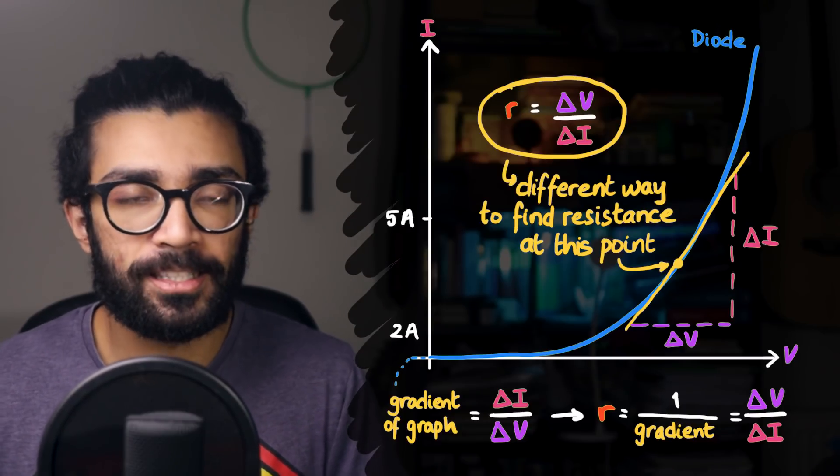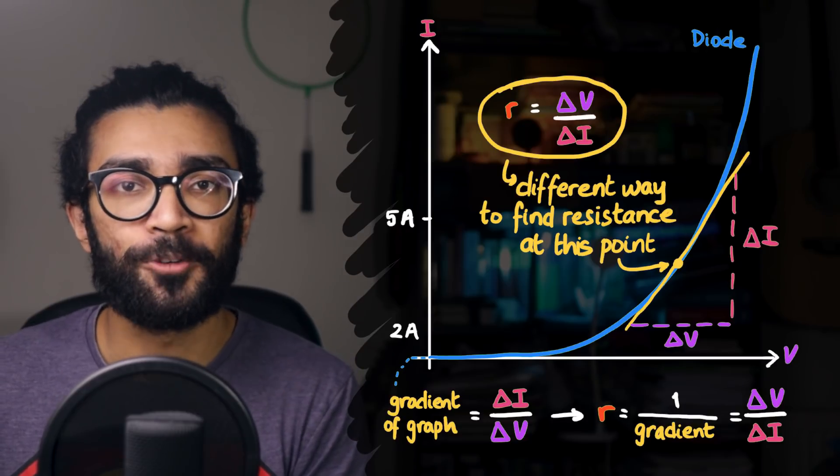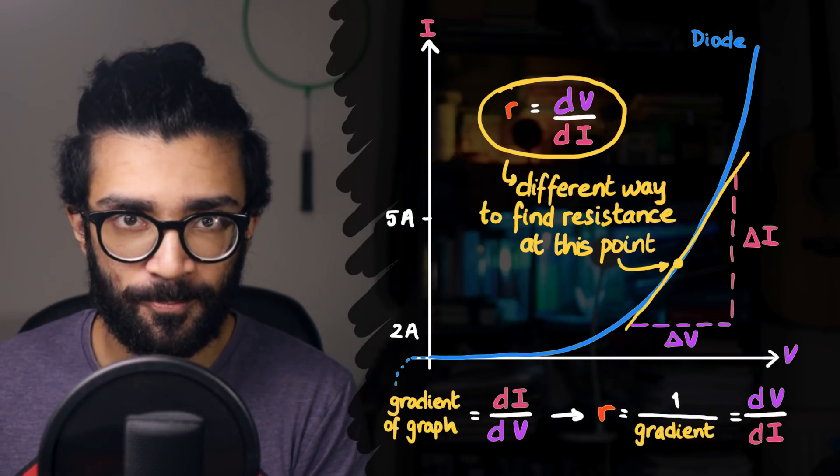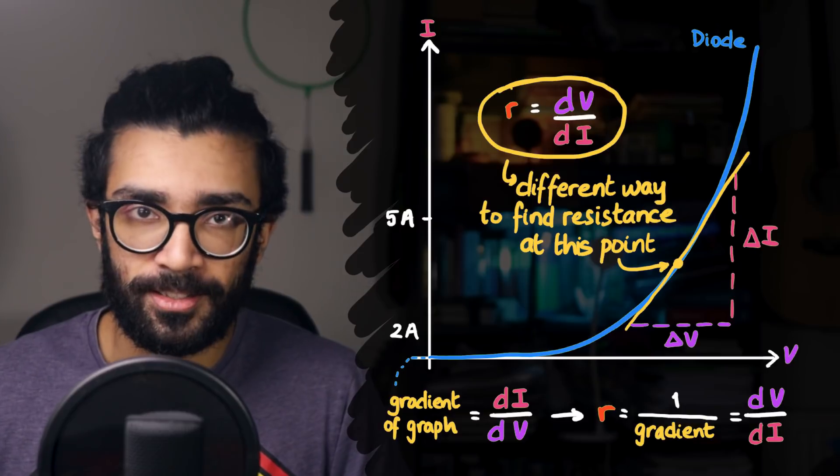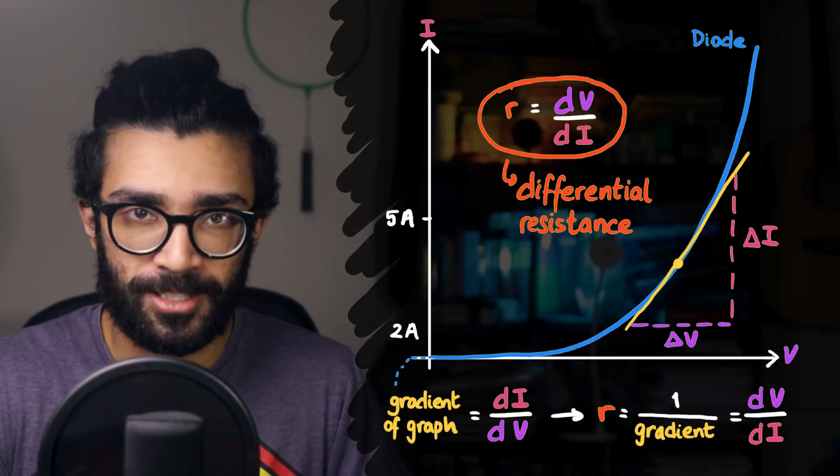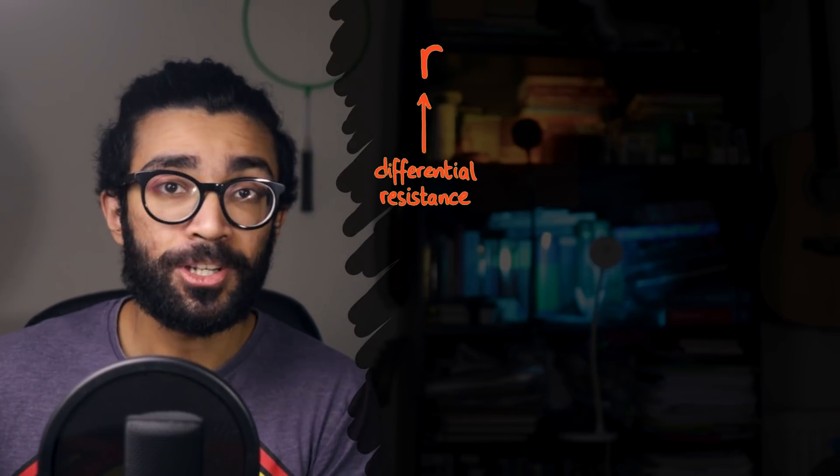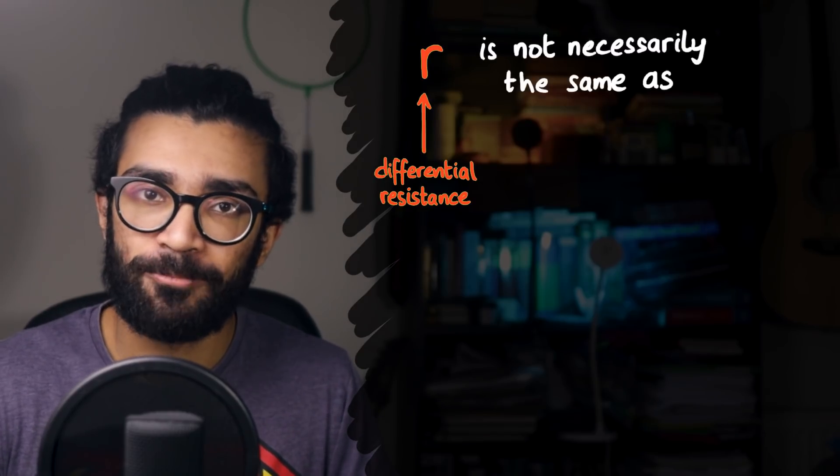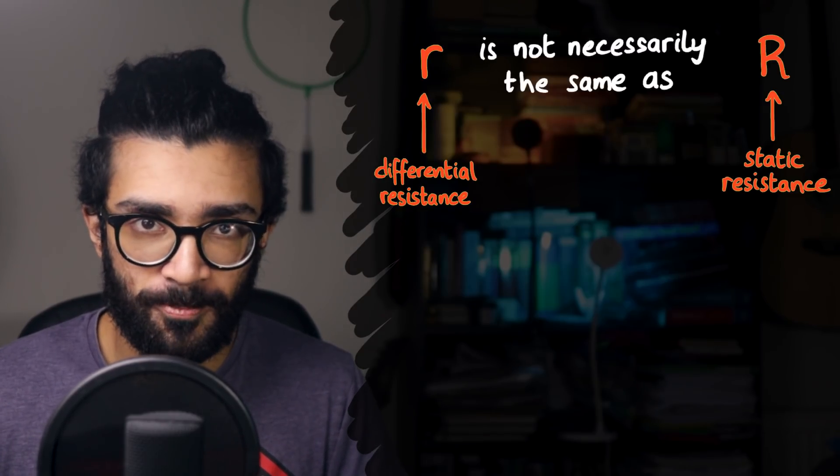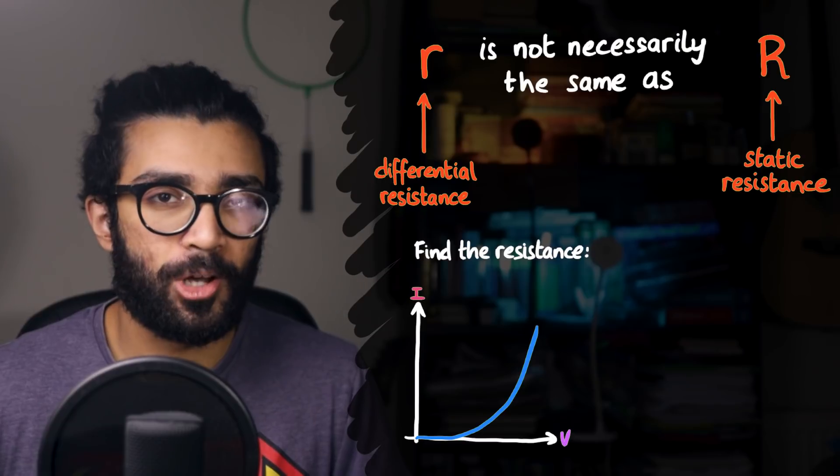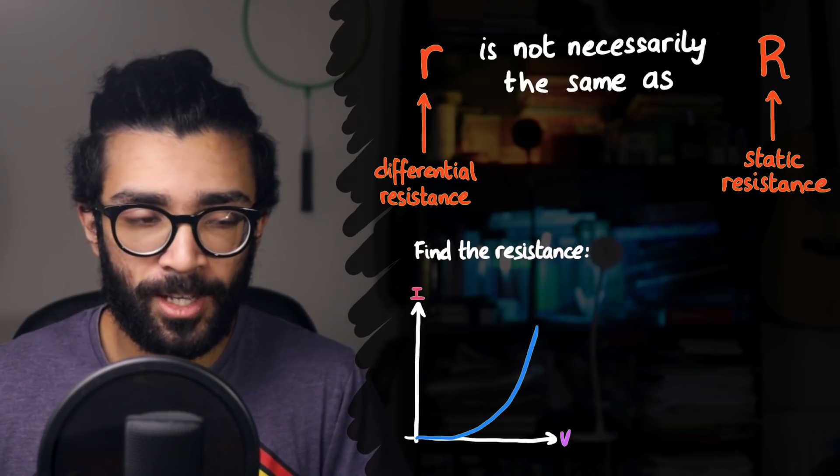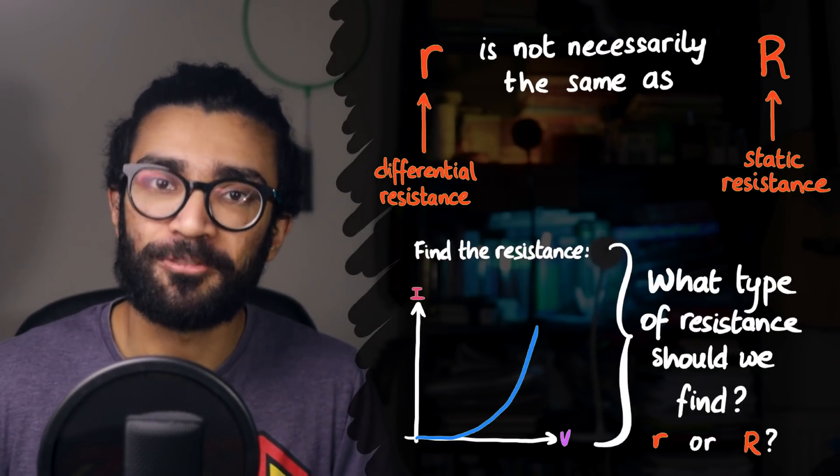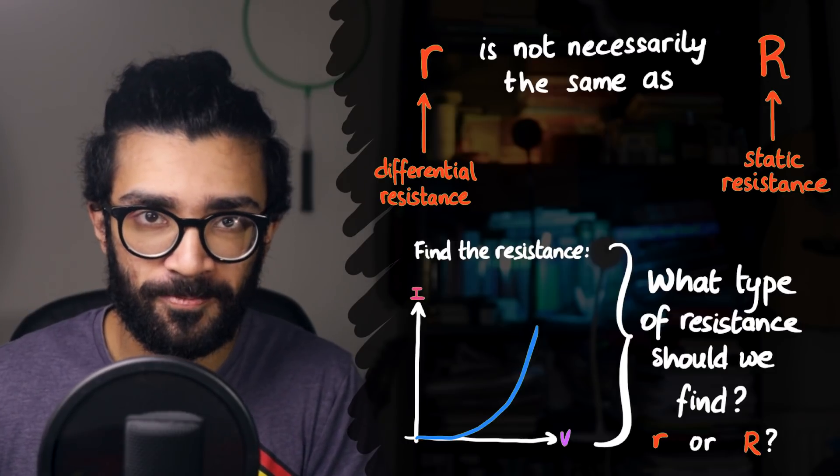Using the language of calculus, so making this even more technical, what we're really looking for is dV/dI. This is a different kind of resistance. It's known as the differential resistance. And it turns out that differential resistance is not necessarily the same thing as static resistance. So, when we are asked to find the resistance of a non-ohmic conductor, we should technically state which kind of resistance we have calculated.